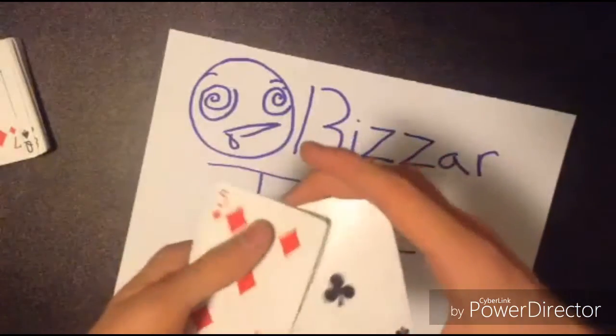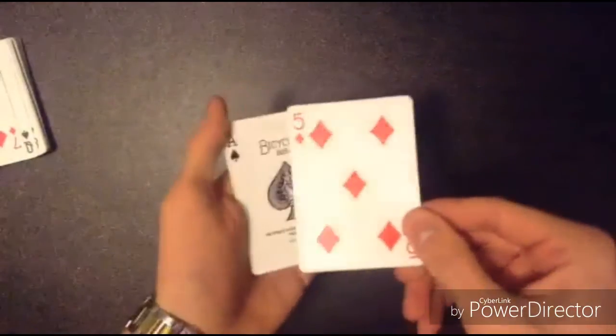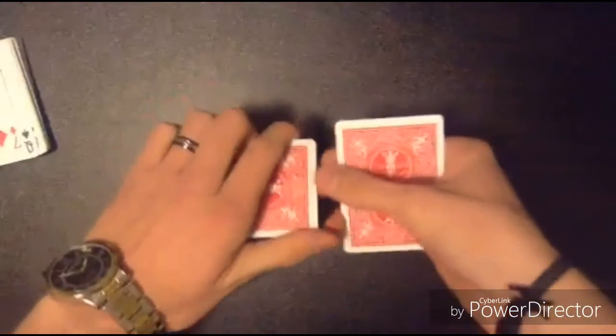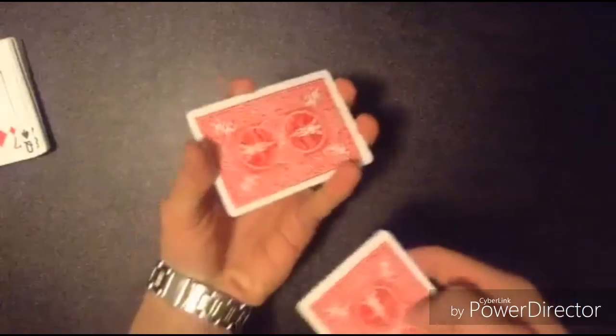So I got the ace of spades, I got the five of diamonds, and I got the ace of clubs. So let's get that away. You can take the five of diamonds, place it face down, and place it in between the two aces.